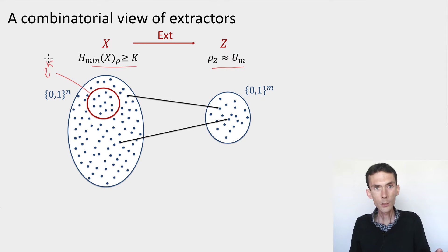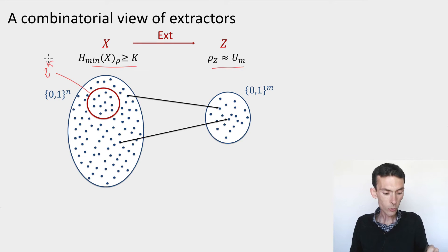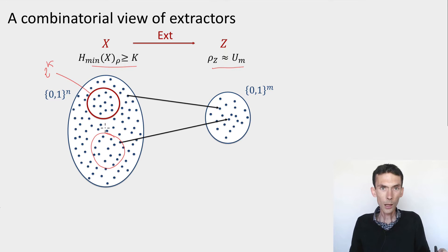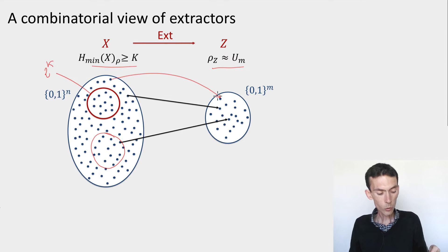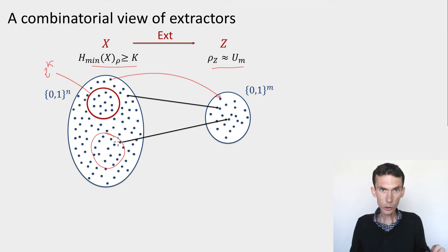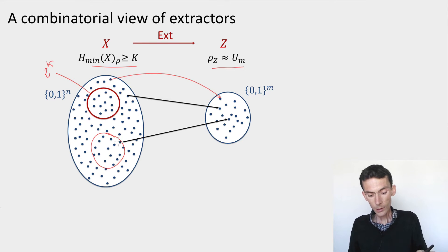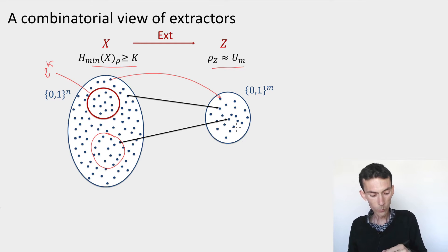The larger the k, the more uncertainty we have and the larger the set in which x could be distributed. But it could be the set I've drawn here, or it could be another set — this is unknown to us. What we'd like is a procedure ext, which is a map that sends any blue dot on the left to a blue dot on the right, such that whatever the distribution of x, as long as it's distributed over a big enough subset of the original set, the output of the procedure is uniformly distributed in the range.